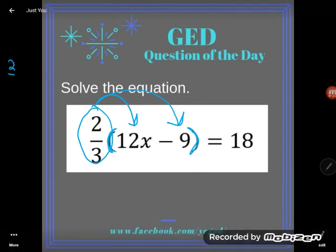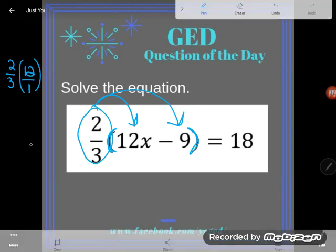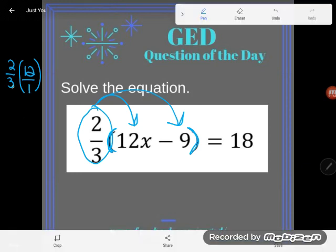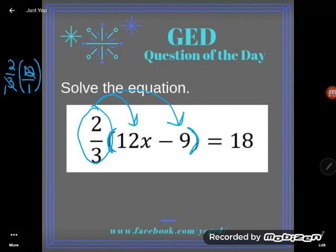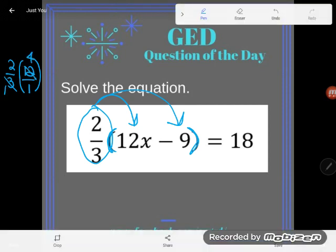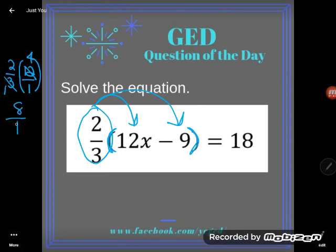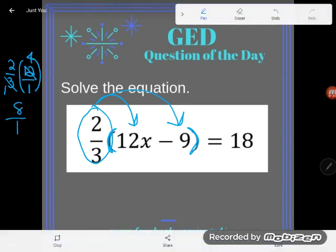But first thing I'm going to do is the two-thirds times the twelve x. Now if I wanted to multiply those, what I would do, I would throw 12 over 1, and then I would just cross-reduce. Both 3 and 12 are divisible by 3, and so 3 divided by 3 gives me 1, 12 divided by 3 gives me 4. Then I would multiply straight across. 2 times 4 is 8, 1 times 1 is 1, and of course 8 over 1 is just 8.